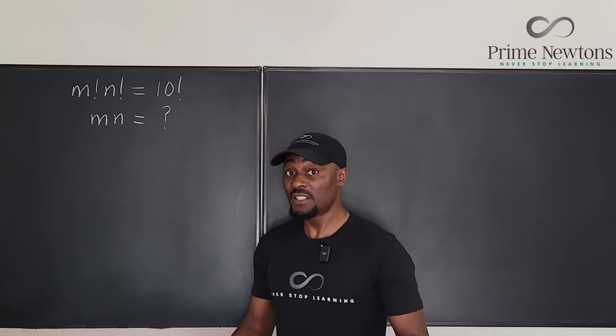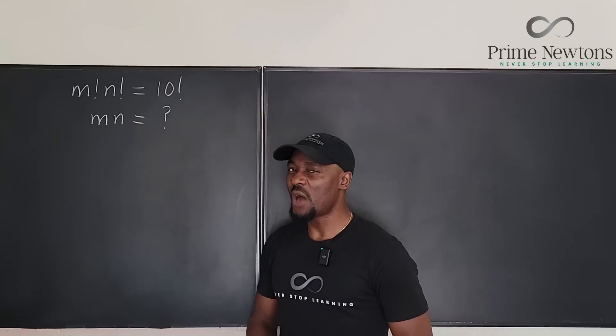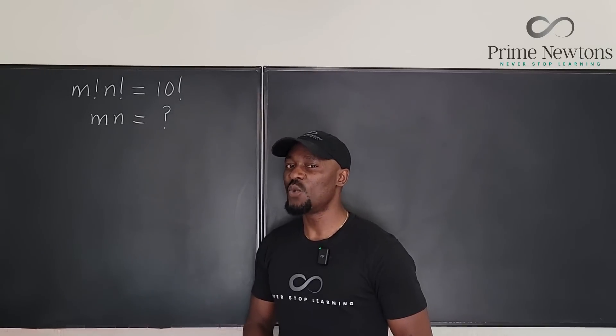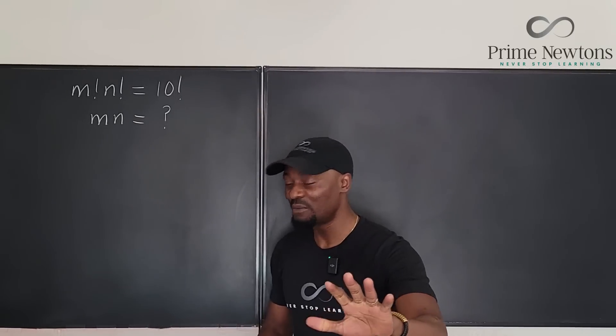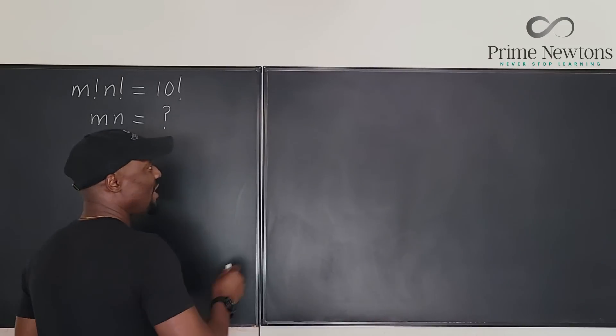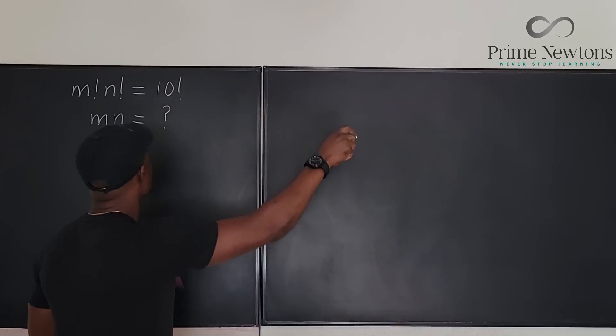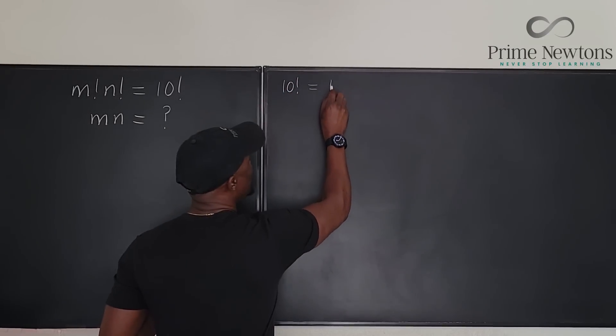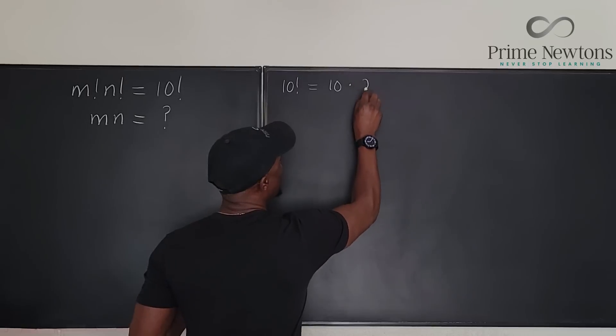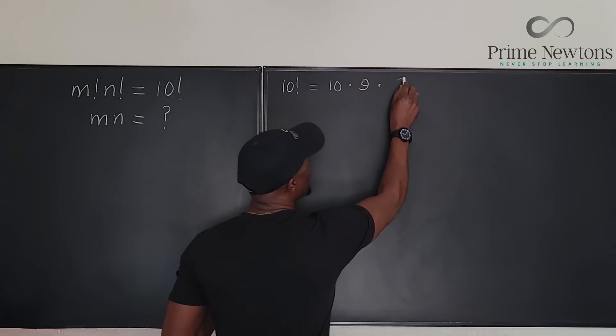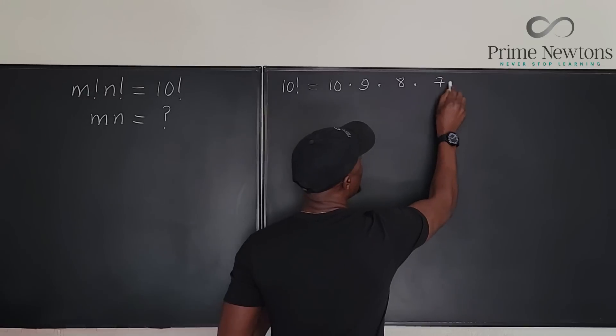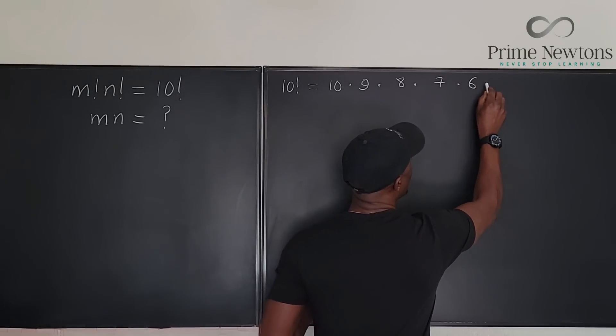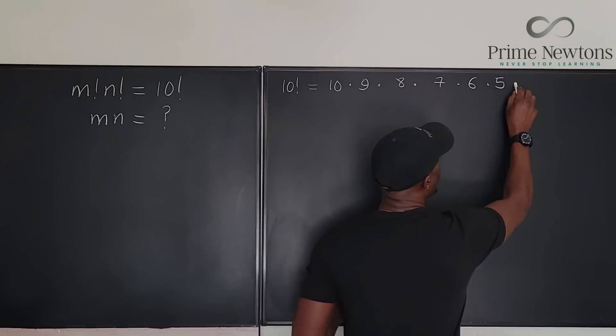So what I would suggest in this problem is to write out 10 factorial and see what you can do. So I'm gonna say that 10 factorial can be written as 10 times 9 times 8 times 7 times 6 times 5 times 4...